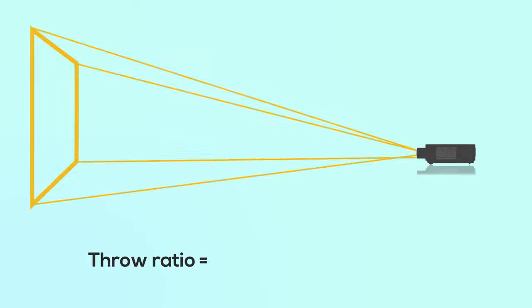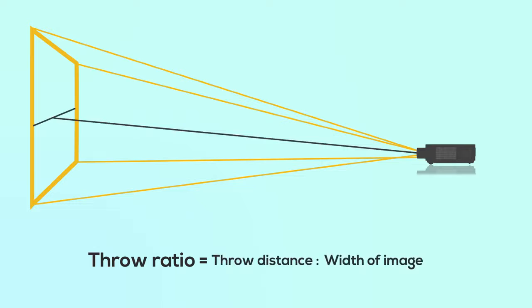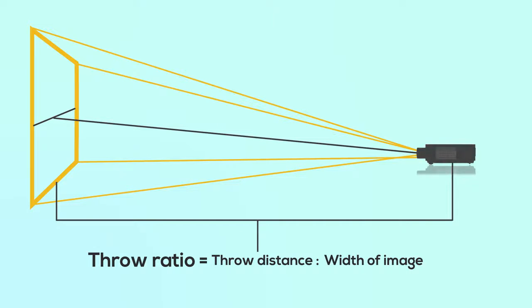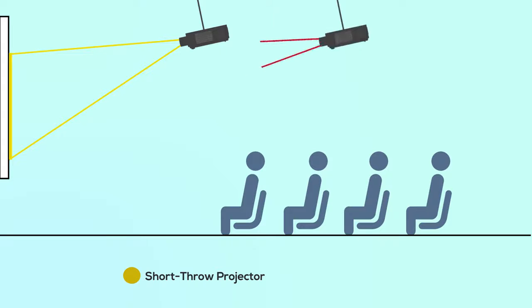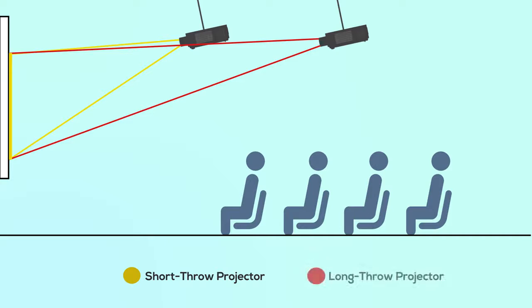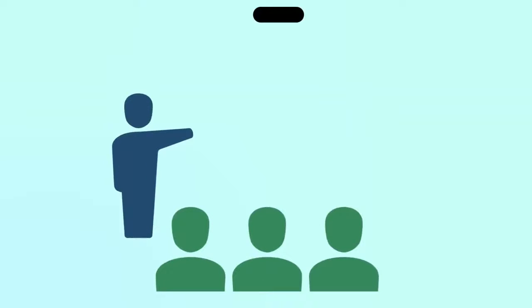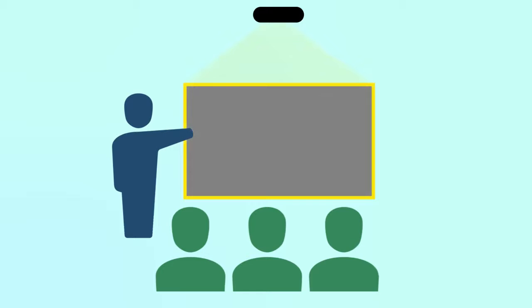While choosing a projector, one of the very first things you need to keep in mind is the throw ratio. The throw ratio is the ratio between the throw distance and the width of the image. The throw distance is the distance between the projector and the screen or wall you are projecting on. If a projector casts a big image while keeping it closer to the projector surface, then it is called a short throw projector, and a short throw projector can be a good fit for a small meeting or conference hall.